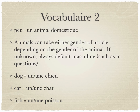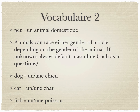So a dog is either un or une chien. A cat is un or une chat. And a fish is un or une poisson.